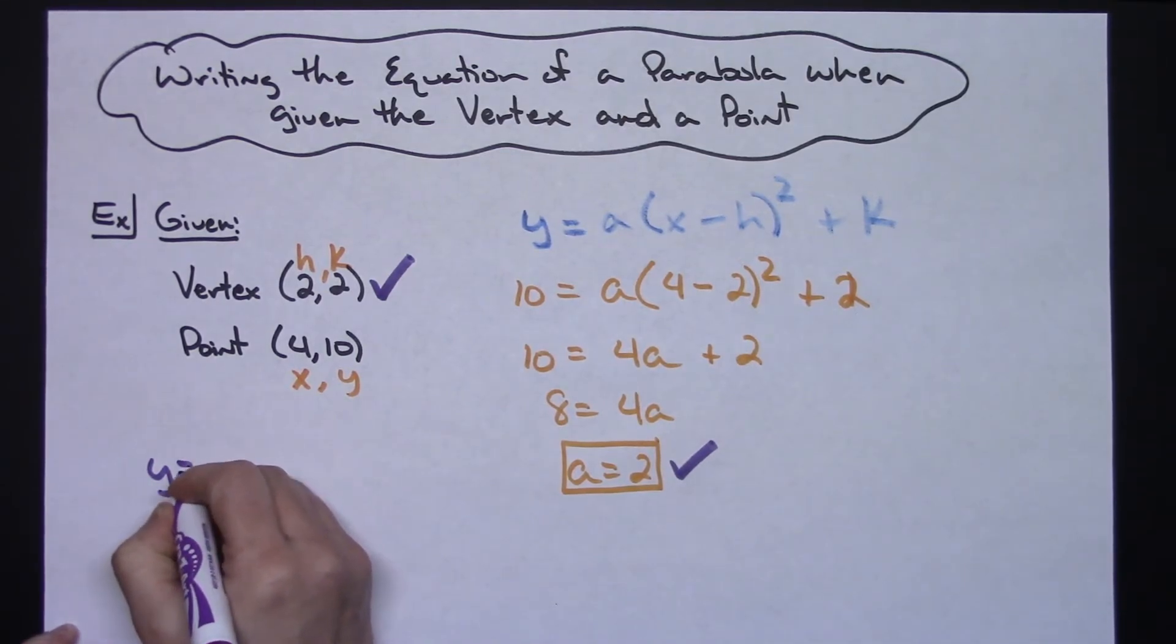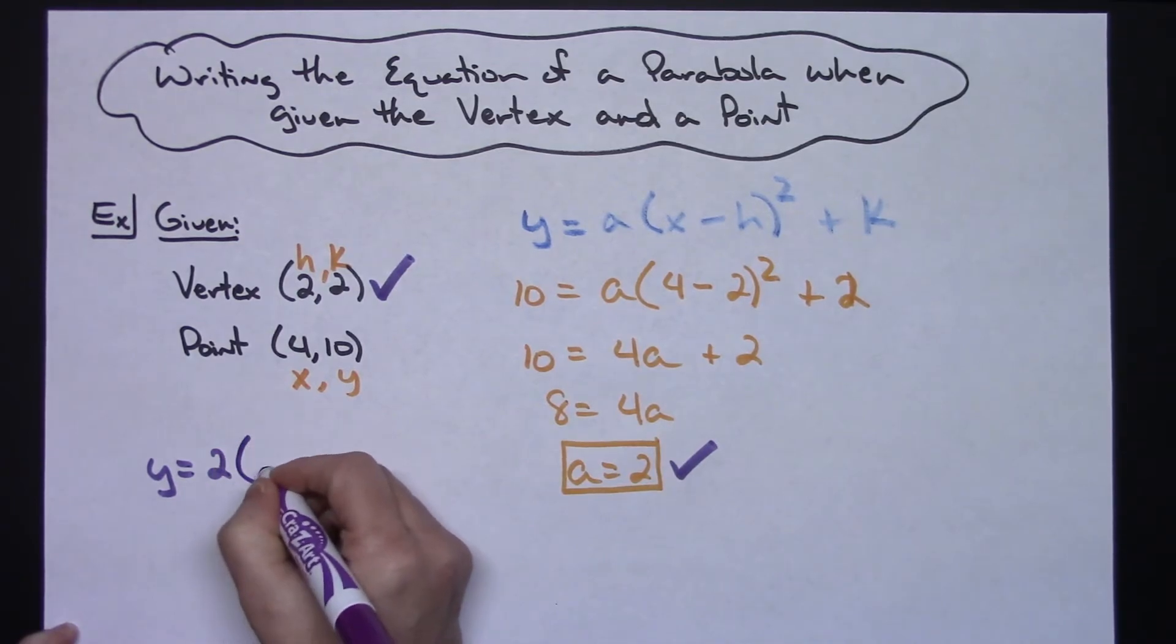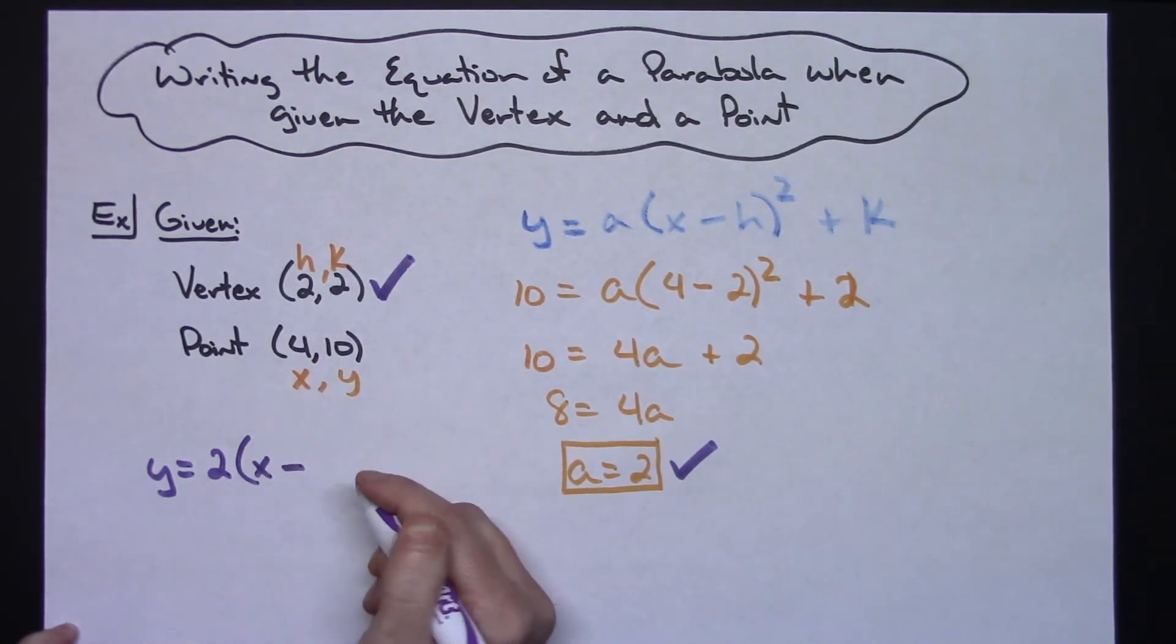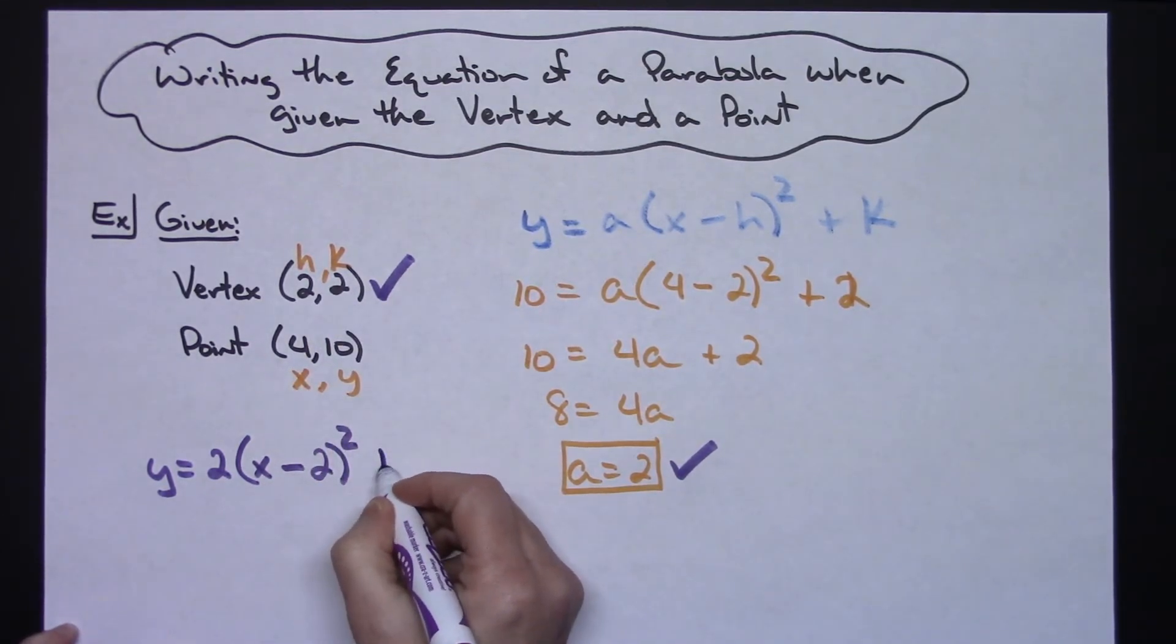So I can write y equals 2(x minus 2) squared plus 2.